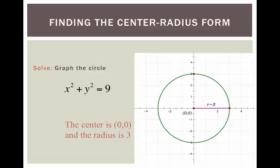Now let's graph it. I plot the center (0, 0) at the origin, and I count 3 units: 1, 2, 3. Here I count it east. I can count going north: 1, 2, 3.